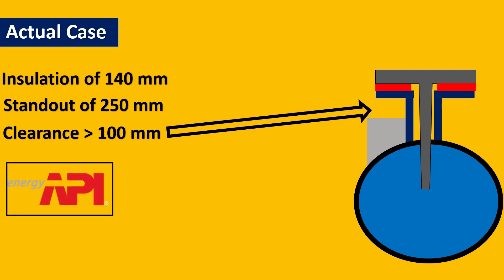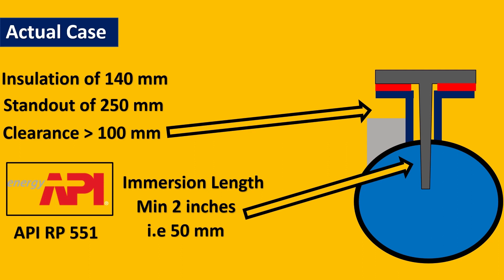So let us maybe choose the API criteria here. So the API RP said the minimum immersion length should be 2 inches, right, 50 mm. So here we will keep this as 50 mm. So my final U-length calculation is going to be 250 mm which is the nozzle standout plus 50 mm which is my immersion length. So my total U-length comes out to be 300 mm.